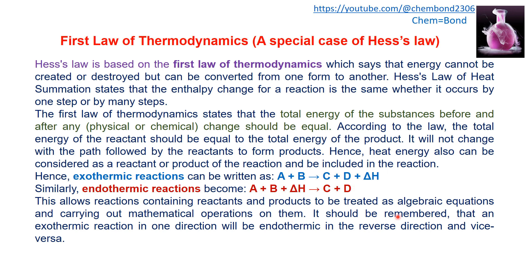It should be remembered that a reaction that is exothermic in one direction will be endothermic in the reverse direction. If A + B → C + D + delta H is exothermic, then combining C + D with heat equal to delta H will regenerate A + B. The energy content remains the same whether the reaction takes place in one step, multiple steps, or any path — it will always remain the same.